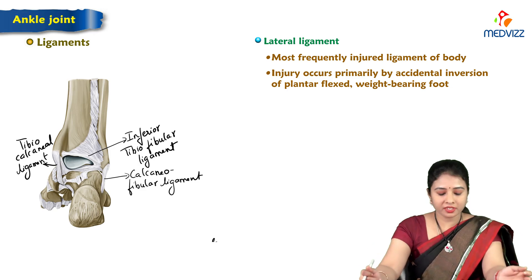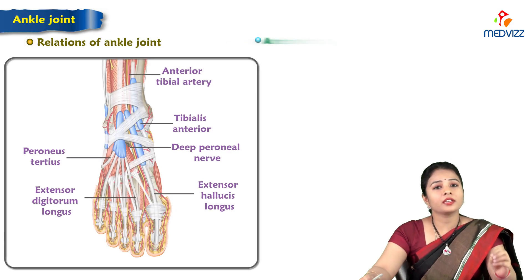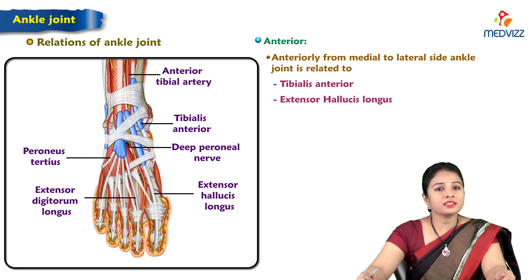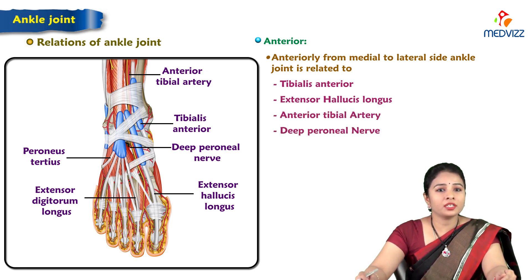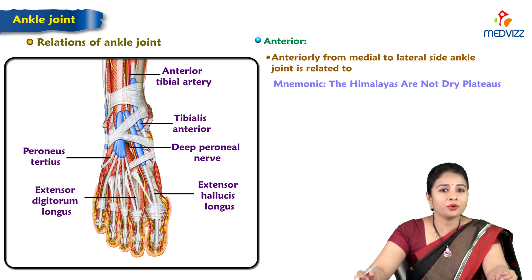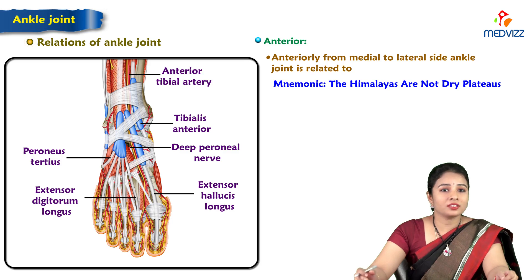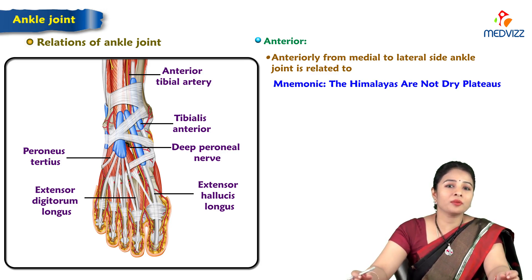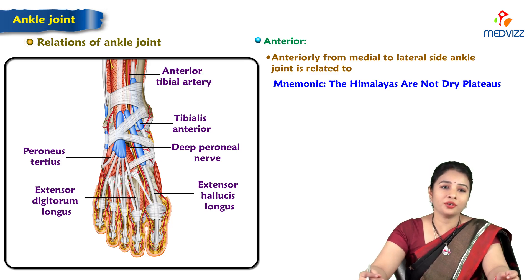Anteriorly, the ankle joint is related from medial to lateral to: tibialis anterior, extensor hallucis longus, anterior tibial artery, deep peroneal nerve, extensor digitorum longus, and peroneus tertius. A mnemonic to remember these: 'The Himalayas Are Not Dry Plateaus' — T for tibialis anterior, H for extensor hallucis longus, A for anterior tibial artery, N for deep peroneal nerve, D for extensor digitorum longus, P for peroneus tertius.